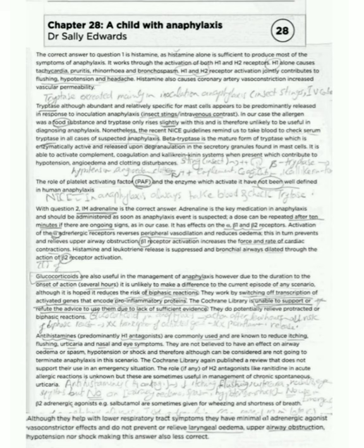Glucocorticoids are also useful in the management of anaphylaxis. However, due to the duration to the onset of action of several hours, it is unlikely to make a difference to the current episode of any scenario. Although it is hoped it reduces the risk of biphasic reactions, they work by switching off transcription of activated genes that encode pro-inflammatory proteins. The Cochrane Library is unable to support or refute the advice to use them due to lack of sufficient evidence. They do potentially relieve protracted or biphasic reactions.